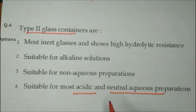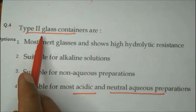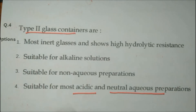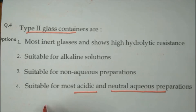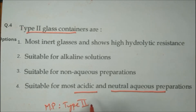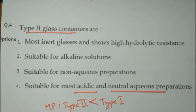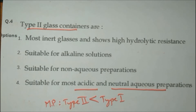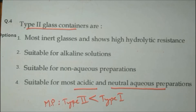Type 2 glass containers are suitable for both parenteral and non-parenteral acidic as well as neutral aqueous preparations. One more important point: type 2 glass containers generally have a lower melting point than type 1. Type 1 has a higher melting point. We will discuss all four types in detail later in this video when another question on glass containers comes up.